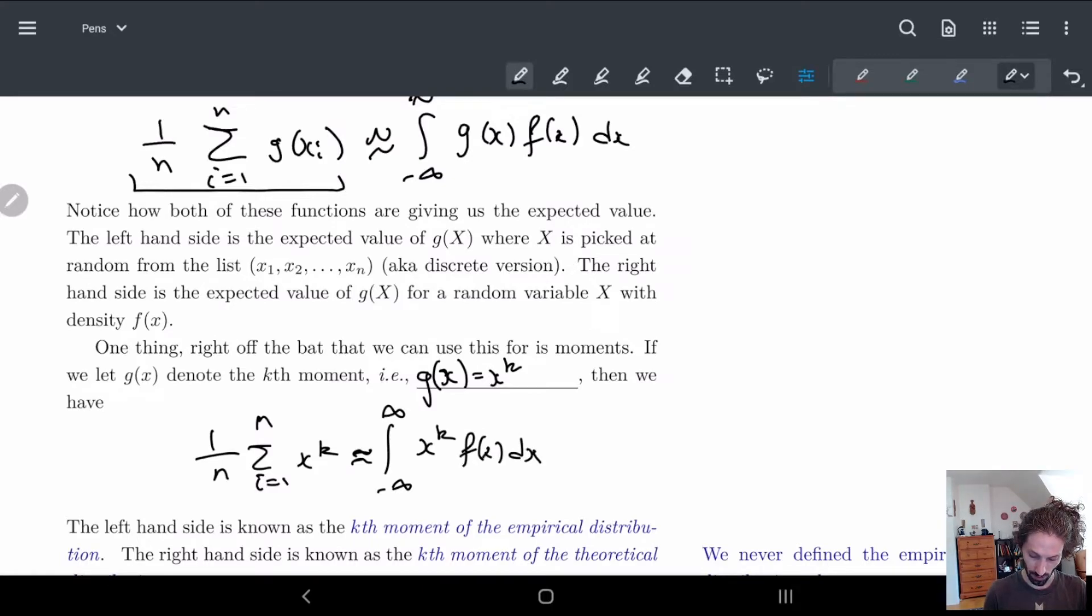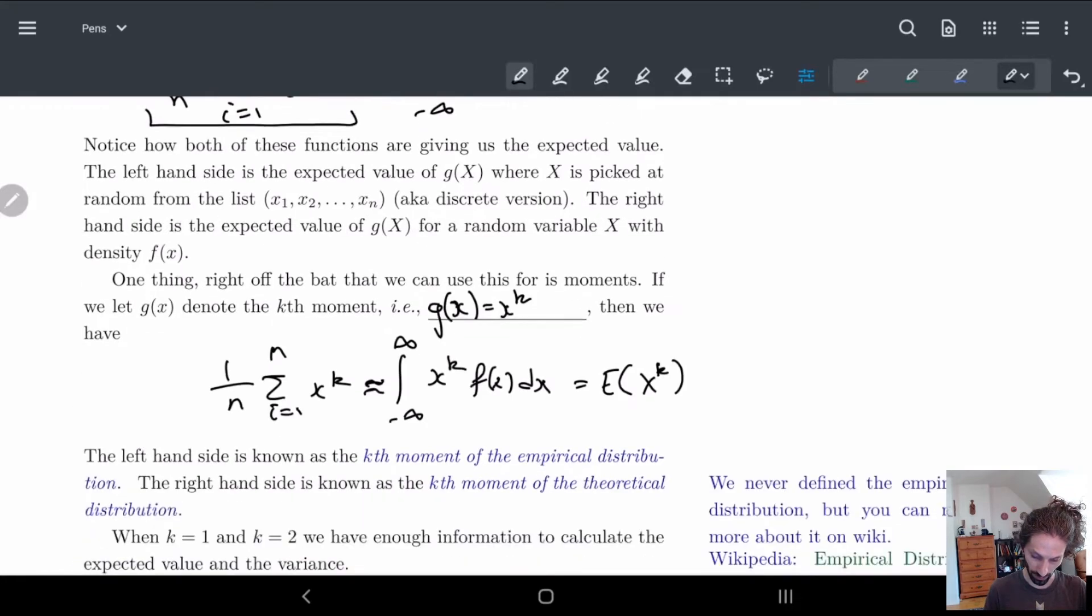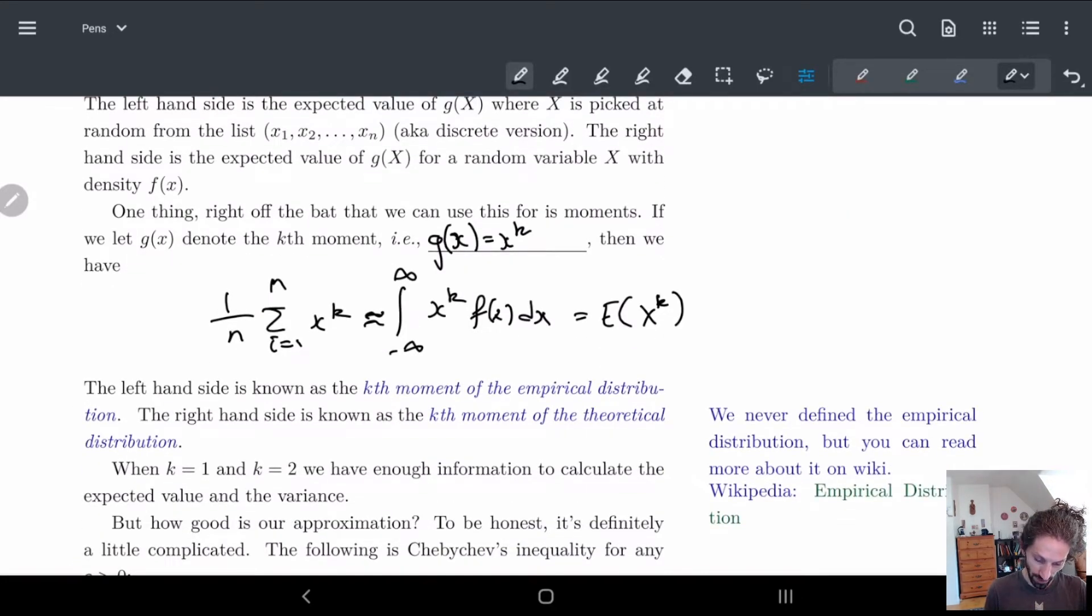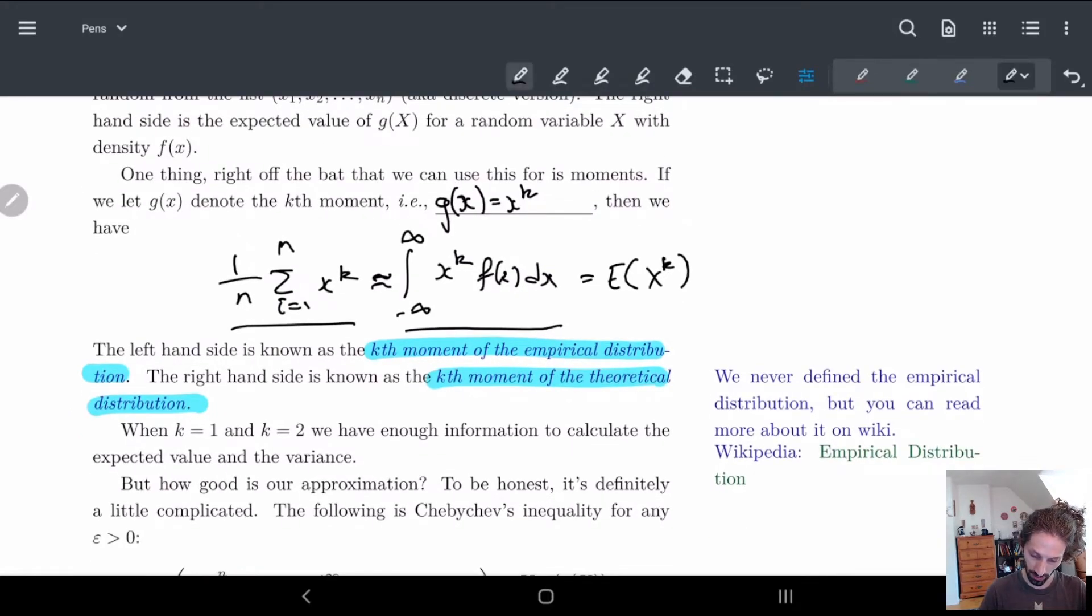So this is kind of where we're going with this. So the left hand side is the empirical distribution and the right hand side is the theoretical distribution. And we write that down that way. So technically we never defined the empirical distribution but if you want you can read more about it on the wiki. So I have a little note here. You can read more about it and how this kind of works on the wiki. It's super complicated.